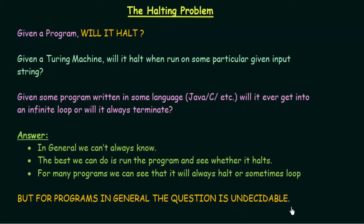If the halting problem is undecidable, that means there is no Turing machine that can be designed to solve it. From the Church-Turing thesis, anything computable can be designed using a Turing machine, and conversely, if there is no Turing machine for a task, the problem cannot have an algorithm. Since the halting problem is undecidable, we cannot design or develop an algorithm to solve it — meaning we cannot determine in general whether a given program will always halt under every condition.